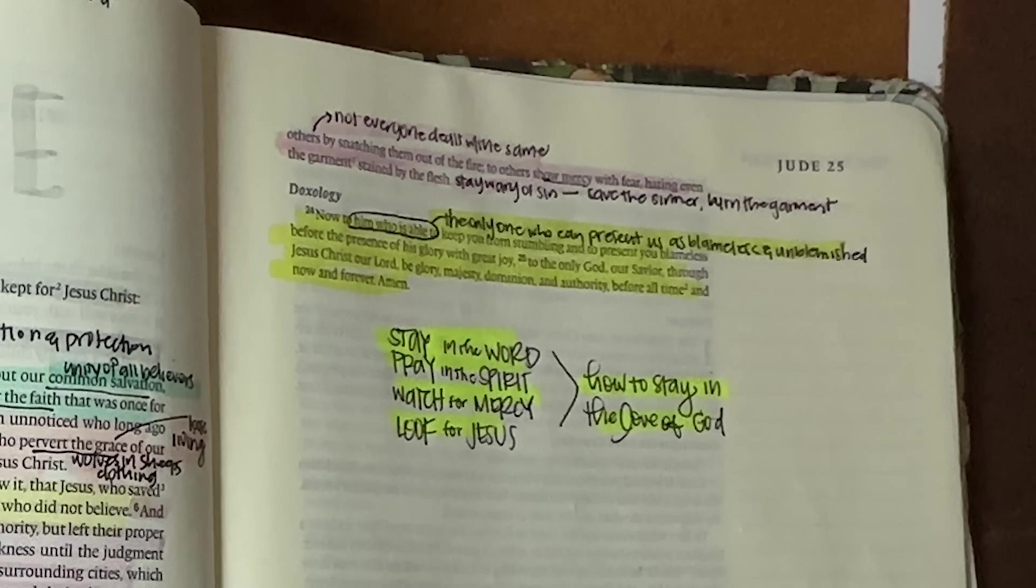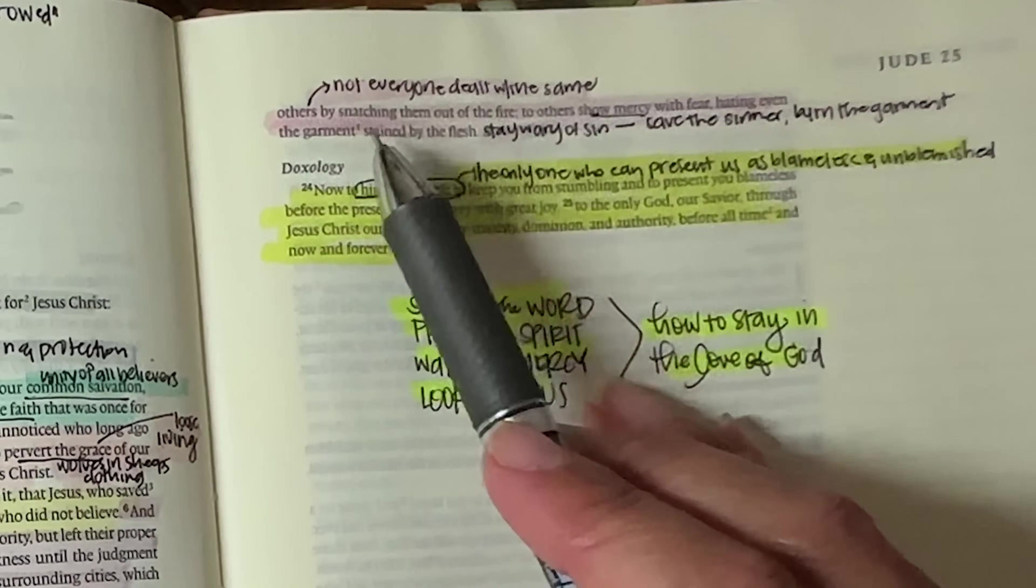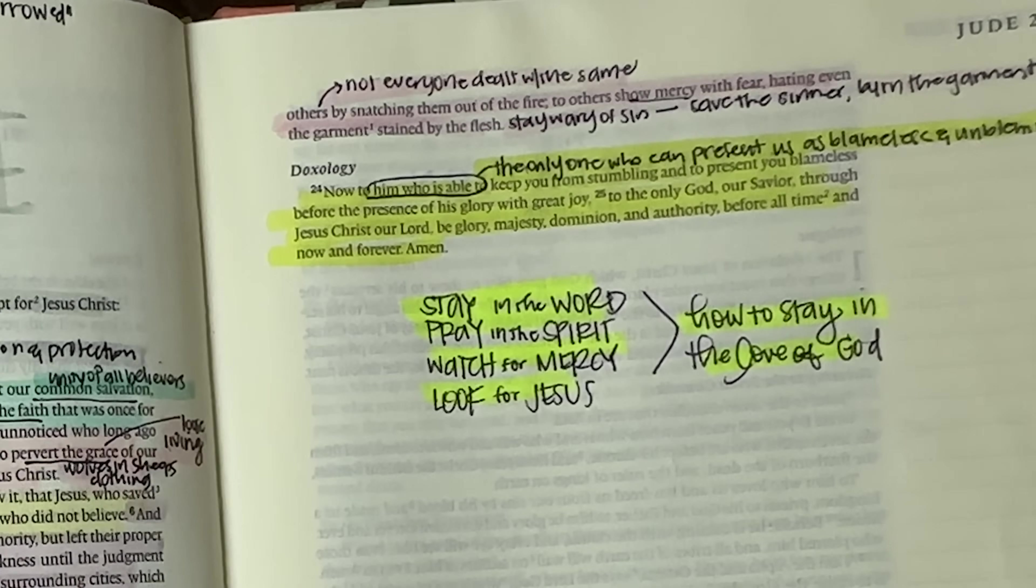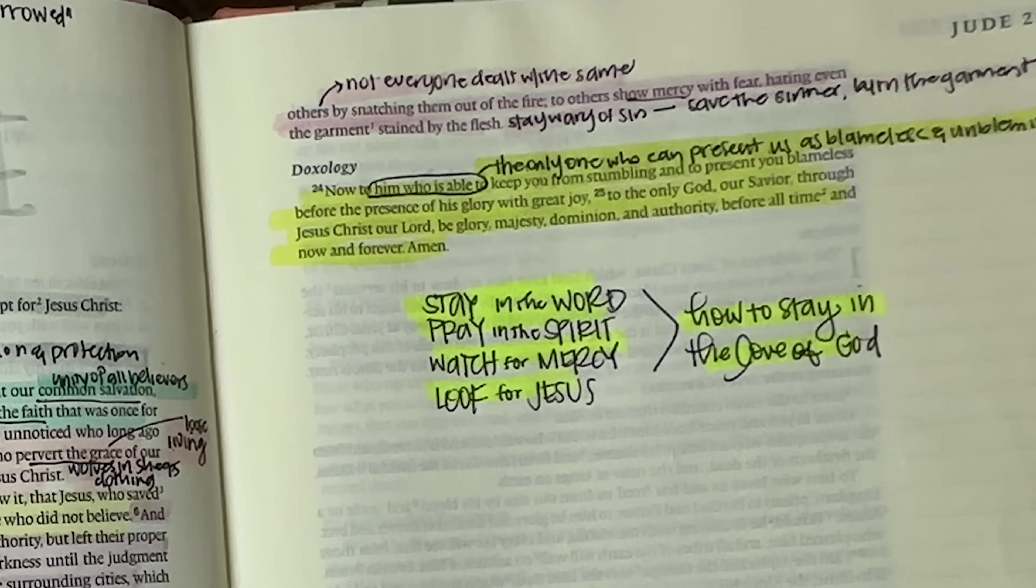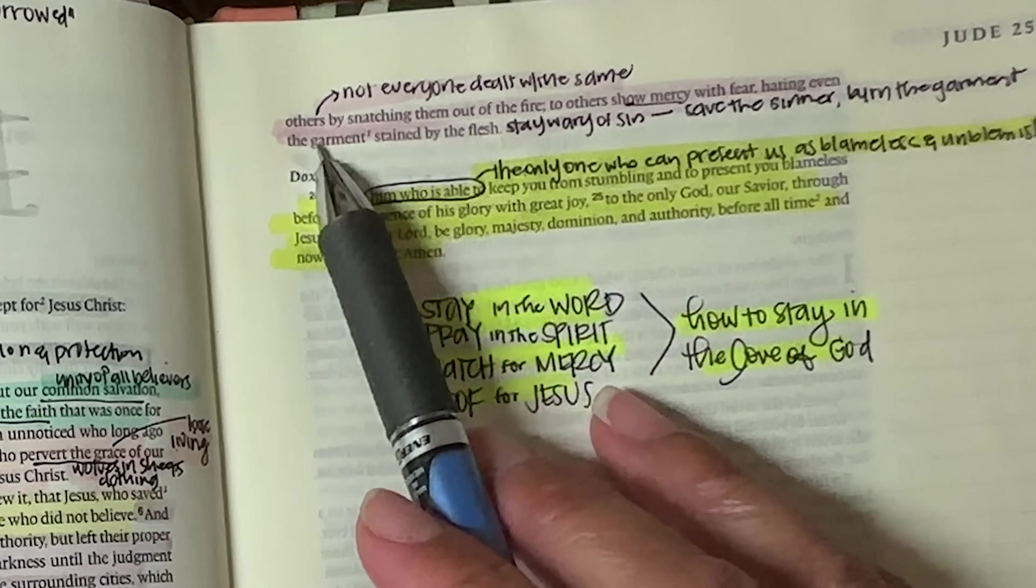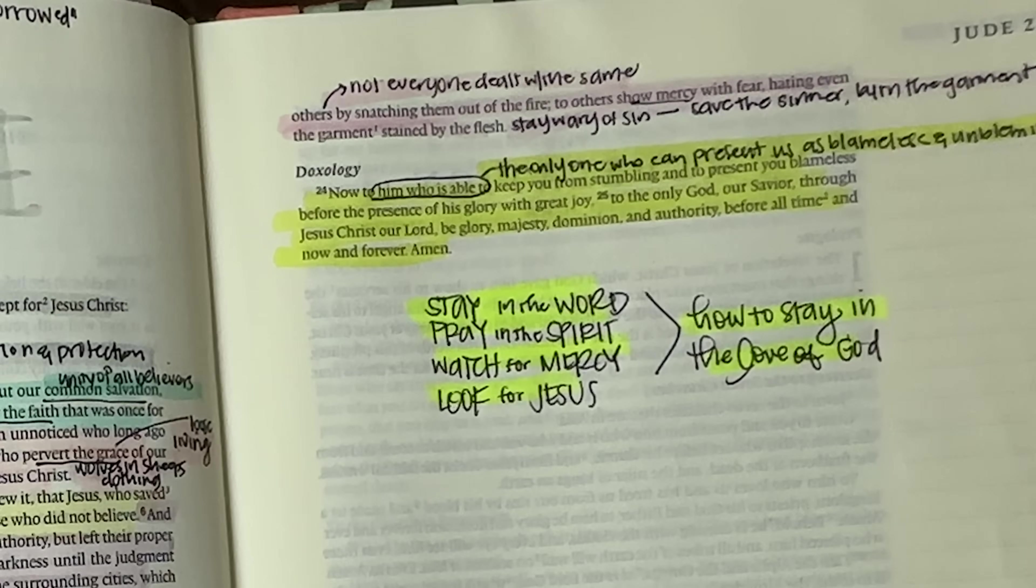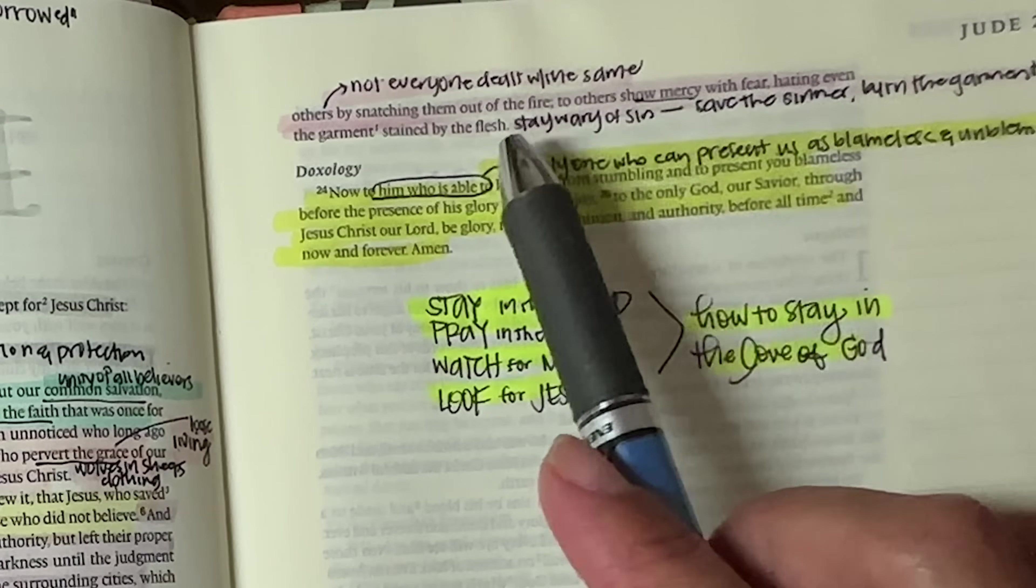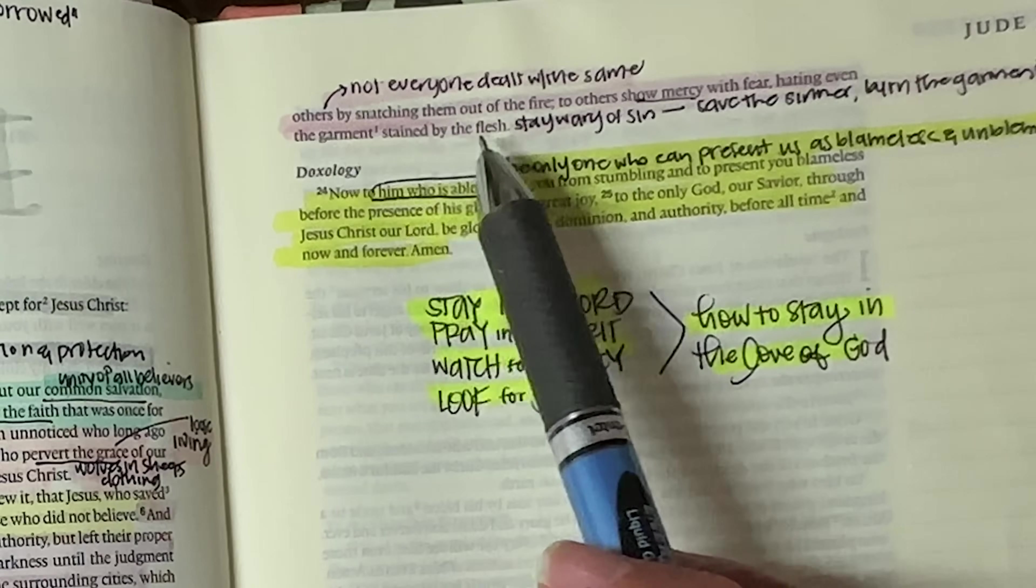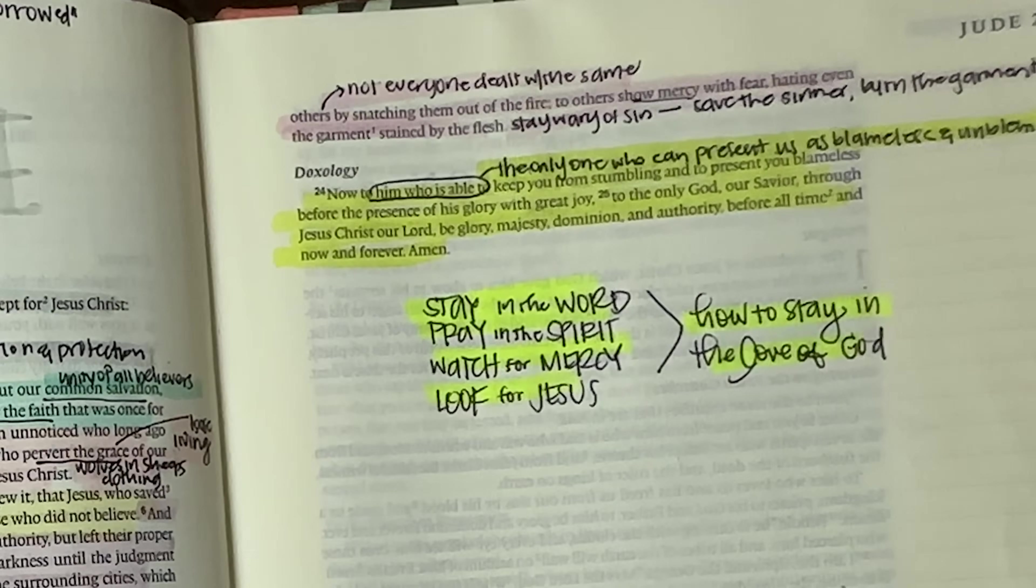And have mercy on those who doubt. Save others by snatching them out of the fire. So not everyone's going to be dealt with the same. You know, those who may have been a little bit weak and were innocent in the matter, but kind of fell weak to this deception, you know, have mercy on them. But you might have to just take somebody else by the shoulders and snatch them away. So not everyone is dealt with the same. You have to have discernment on that. Show others mercy with fear, hating even the garment stained by flesh. So basically stay wary of sin, save the sinner, burn the garments.